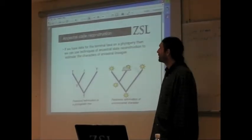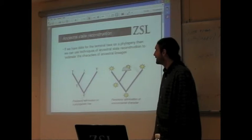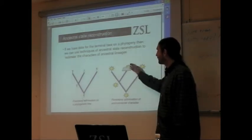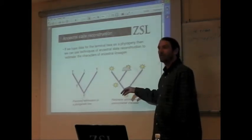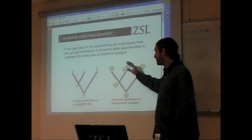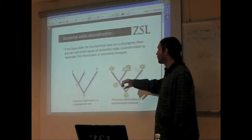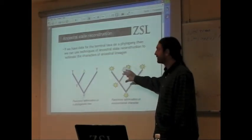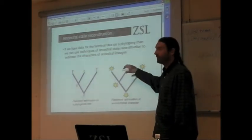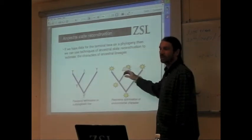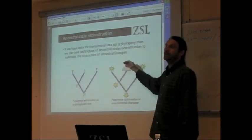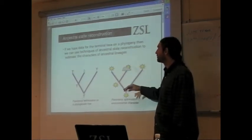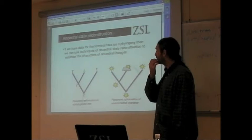In the last part, we're going to look at ancestral state reconstruction — ancestral state reconstruction of individual characters, as in climatic characters, and then combine these together for ancestral niche reconstruction.